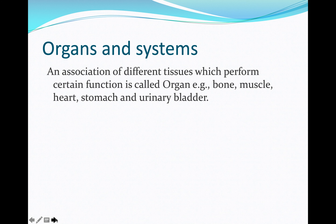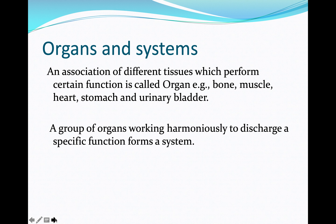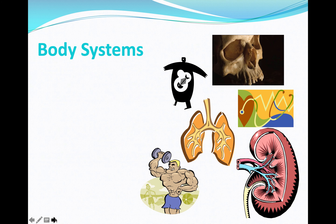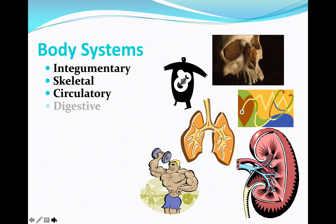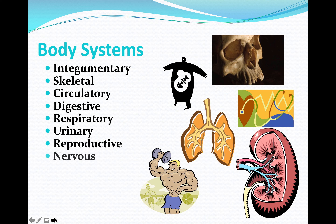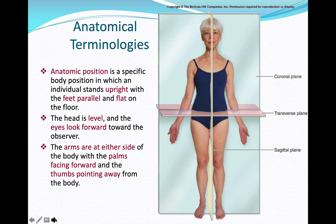An organ is an association of different tissues which performs specific functions — examples include bone, muscle, heart, stomach, and urinary bladder. A group of organs working together to discharge a specific function forms an organ system. There are 11 systems in the human body: integumentary, skeletal, circulatory, digestive, respiratory, urinary, reproductive, nervous, muscular, endocrine, and lymphatic.